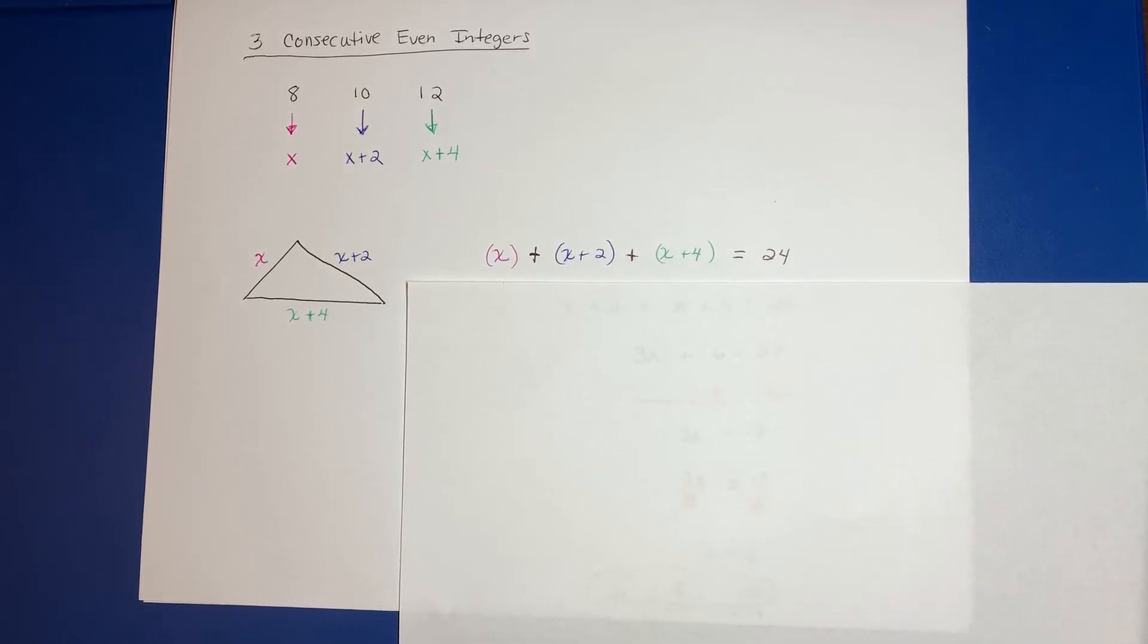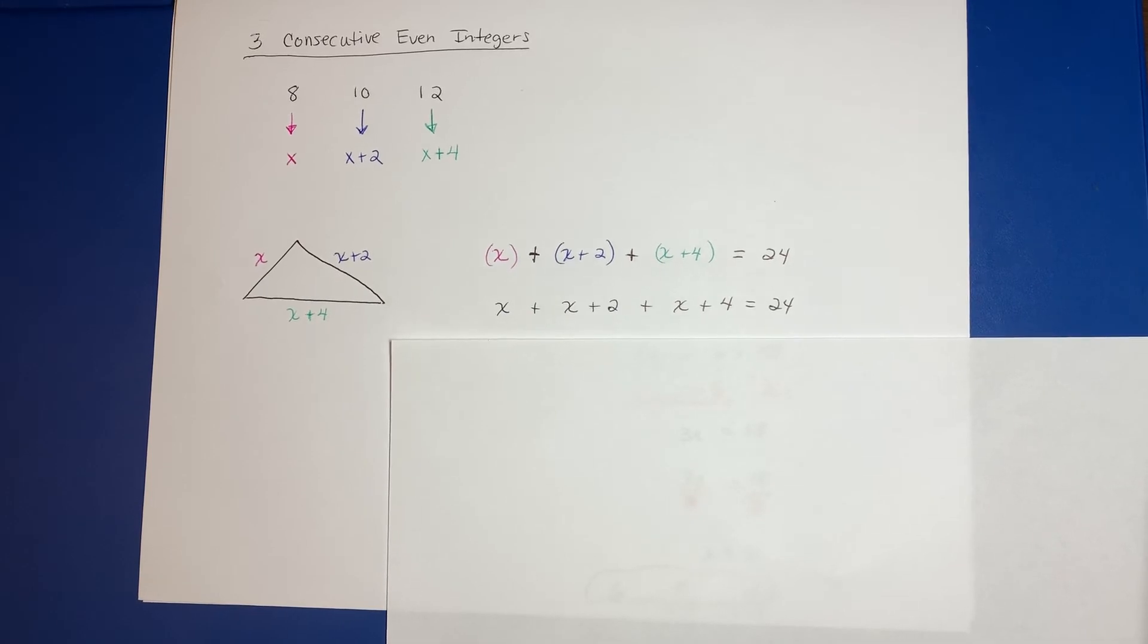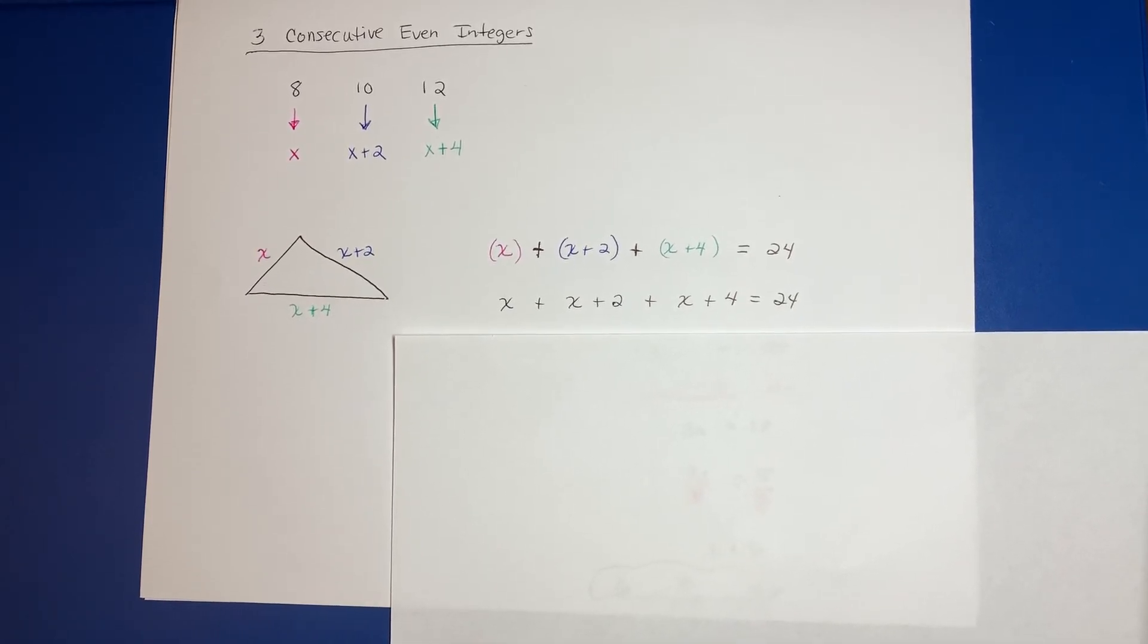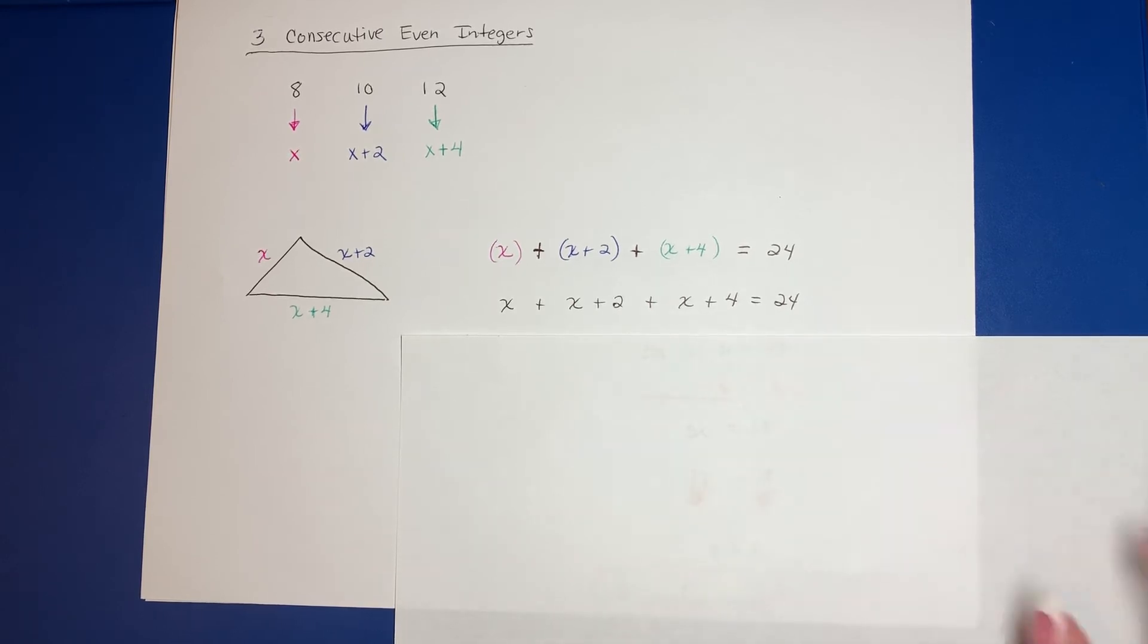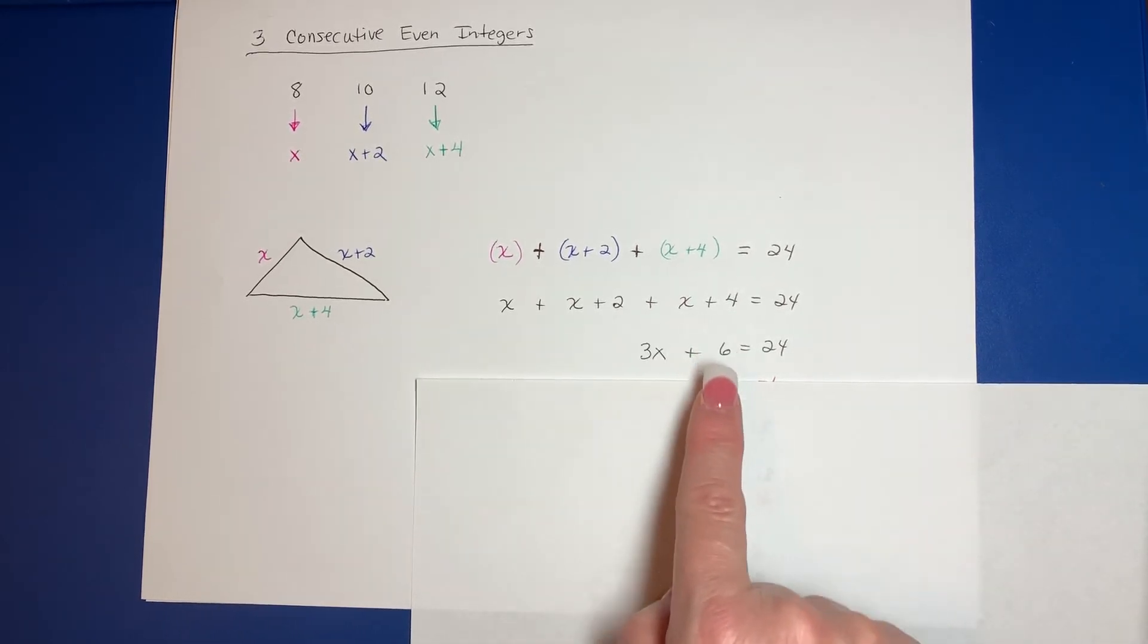Algebraically, if I had to write it without all my colored pens, it would look like X plus X plus 2 plus X plus 4 equals 24. Then I would combine like terms. I've got three X's, and 2 plus 4 adds up to 6, so now I got 3X plus 6 equals 24.